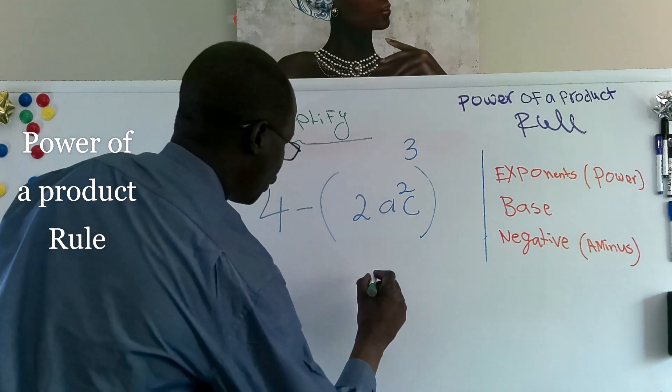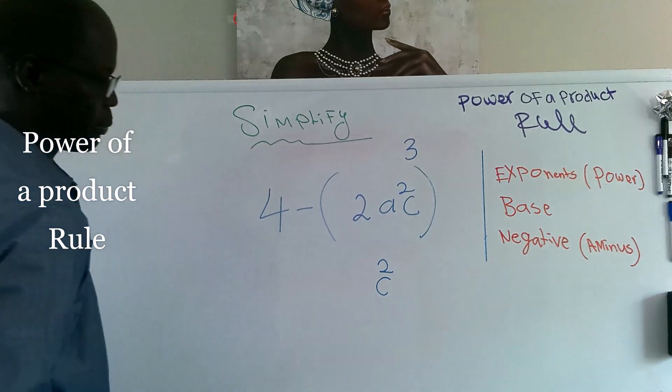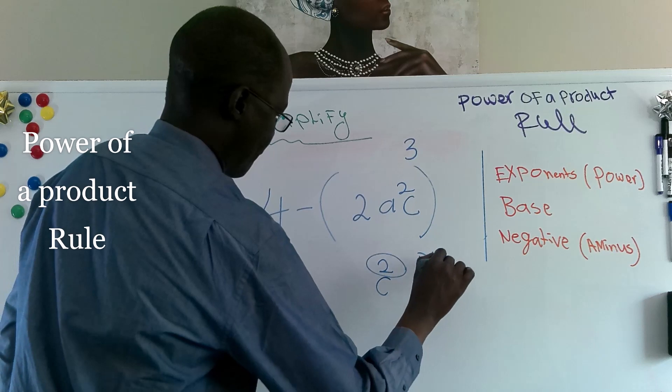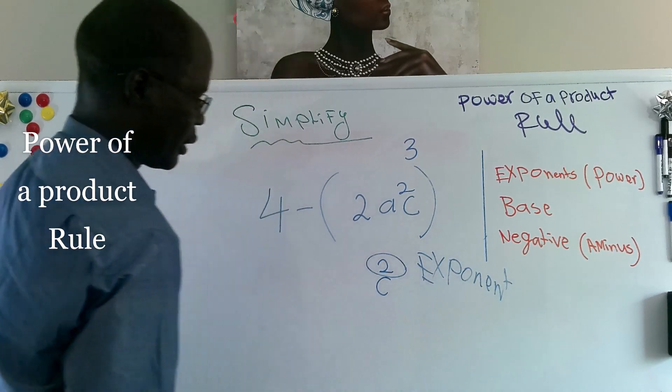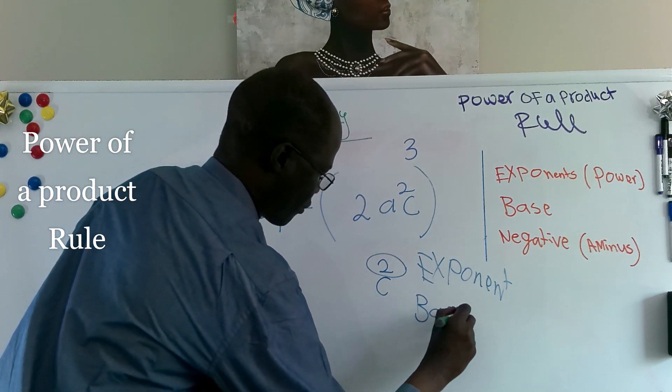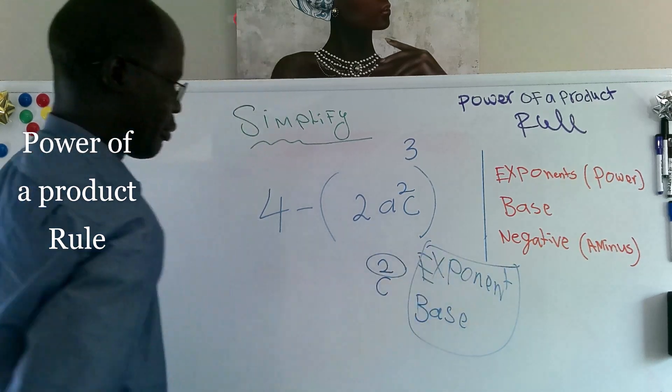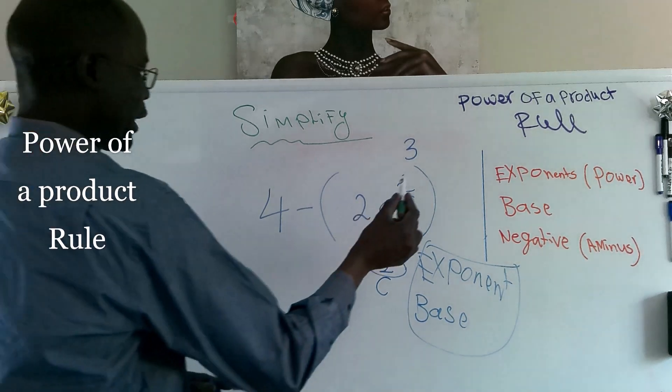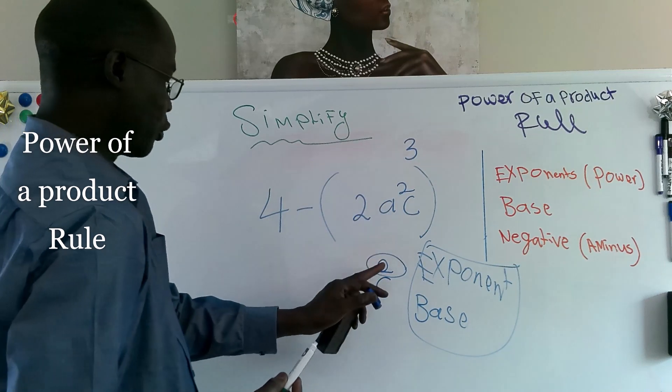The c squared, we call this as exponent, and c we call it base. In this example we're going to deal with the power only or exponent.